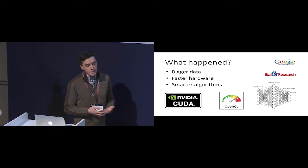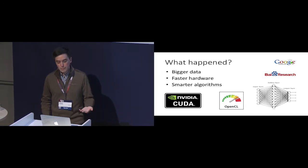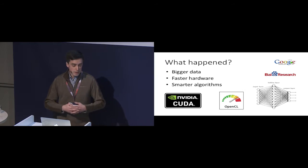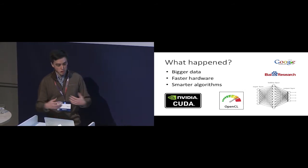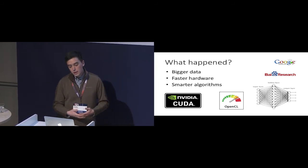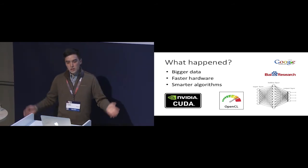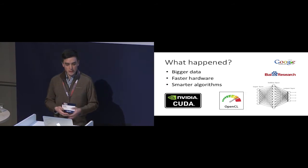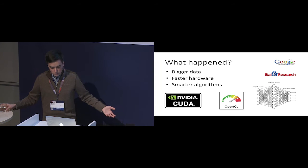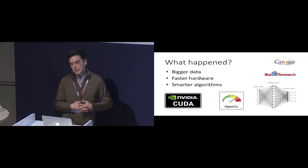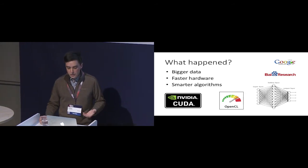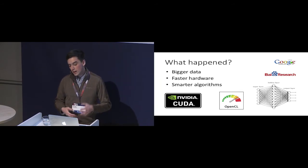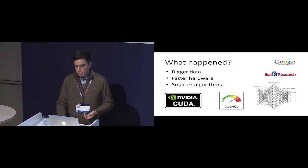Why has it gotten better? There are mainly three reasons. First, we have much more data — measured in terabytes and exabytes — giving us many more examples to learn from, building models that generalize much better. Second, faster hardware: even our personal devices now have more processing capability than the largest mainframes of years ago. Third, and most importantly, we've made very good progress in algorithms and how to approach these problems, making the models we teach machines much more robust.